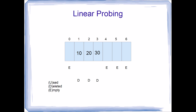For a final example, assume we want to remove 40. The hash function returns index 1. We check element 1 — not used, not empty, so we check its value: 10 is not 40, so we move on. Element 2: not used, not empty, and 20 is not 40. Element 3: not used, not empty, and 30 is not 40. Element 4: not used, but it is empty — that's where the search ends. There is no 40 in this hash table.